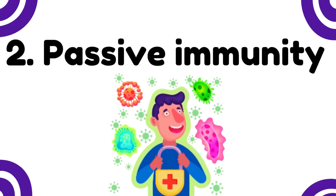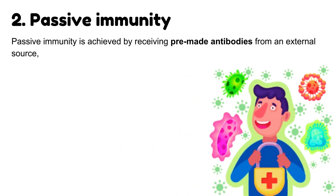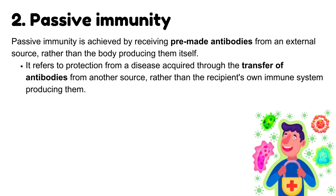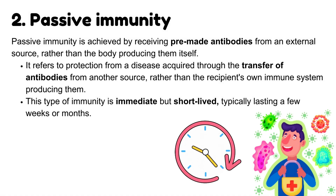The second type of immunity is Passive Immunity. Passive immunity is achieved by receiving pre-made antibodies from an external source, rather than the body producing them itself. It refers to protection from a disease acquired through the transfer of antibodies from another source. This type of immunity is immediate but short-lived, typically lasting a few weeks or months.